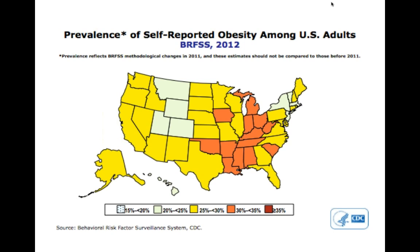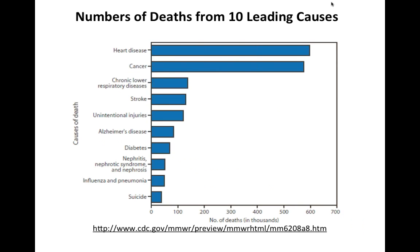Until recently, there was this idea that you could be healthy and overweight or obese. A recent study came out showing an increased incidence of morbidity and also an increased risk of early death — not from specific disease, but just by virtue of being overweight and obese. Those same risk factors lead to the leading causes of death in the United States. Obesity is a risk factor for heart disease, for certain types of cancer including colorectal cancer, stroke, Alzheimer's disease, and certainly diabetes.